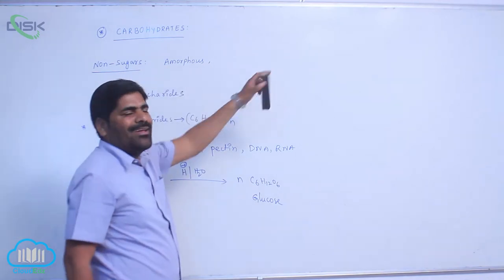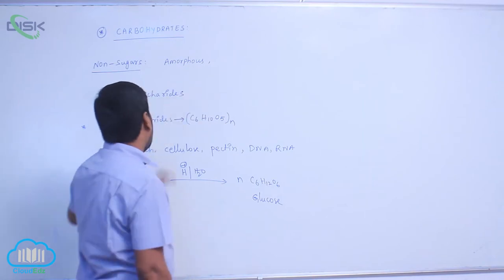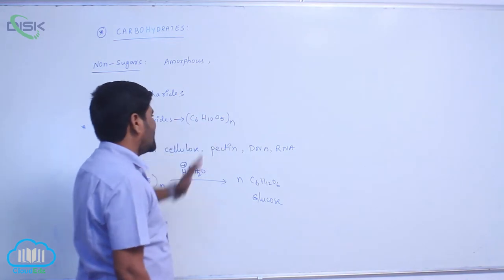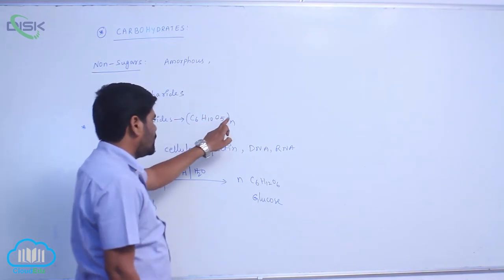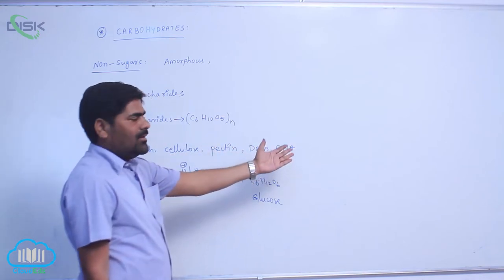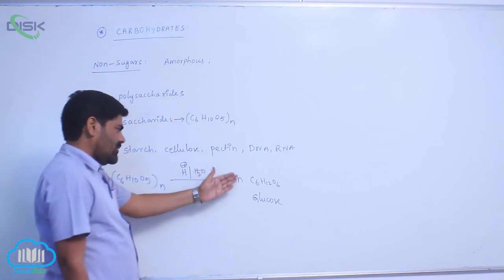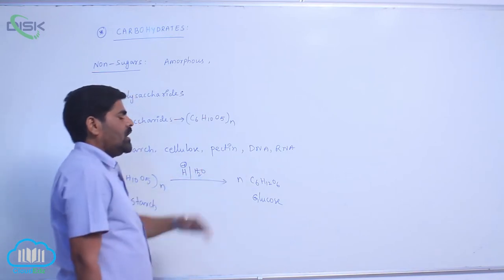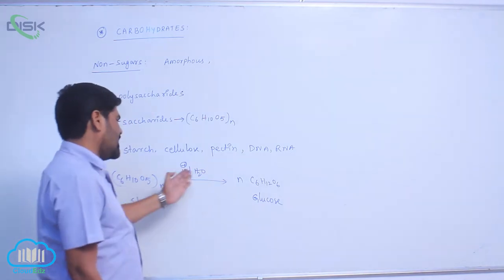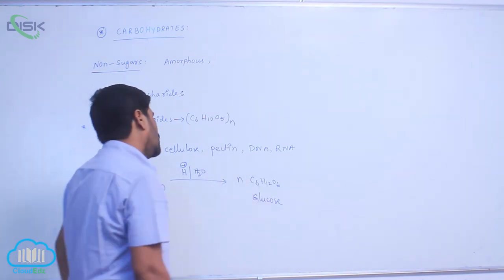Polysaccharides are amorphous and bitter in taste. They are also called polysaccharides, with the general molecular formula C6H10O5N. Examples include starch, cellulose, pectin, DNA, RNA, etc. Hydrolysis of a polysaccharide such as starch gives many monosaccharide units — for example, several molecules of glucose.